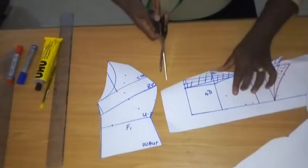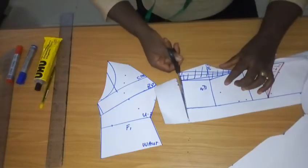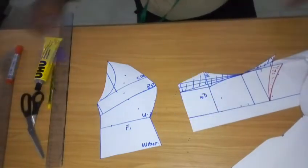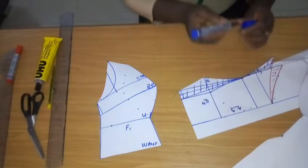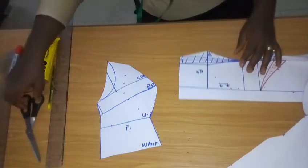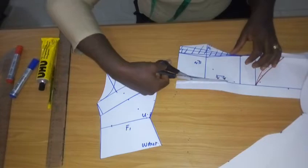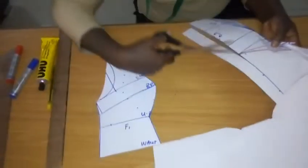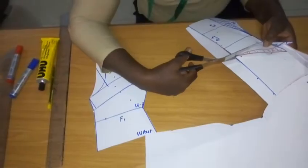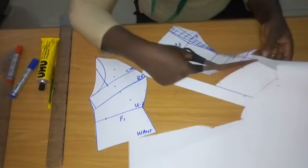Coming over to the F2, number 2, that is the center front area. I want you to note that this is the center front area and it's going to be cut on fold. You can see my fold sign right there. So I will just cut this part. And I'm going to cut the new neckline. Please make sure you cut on the new neckline.